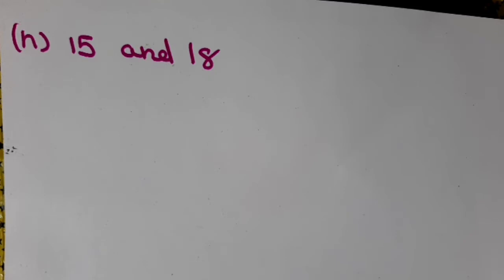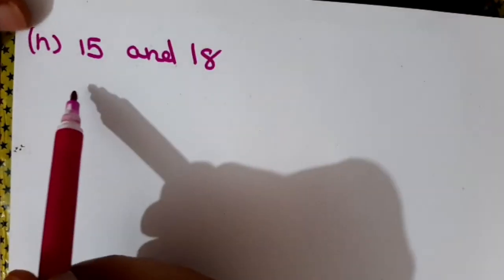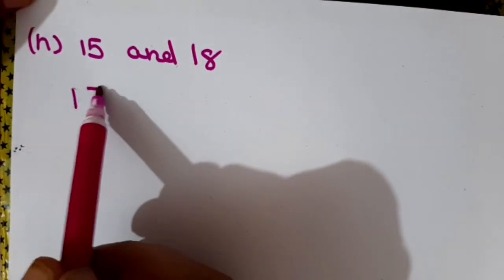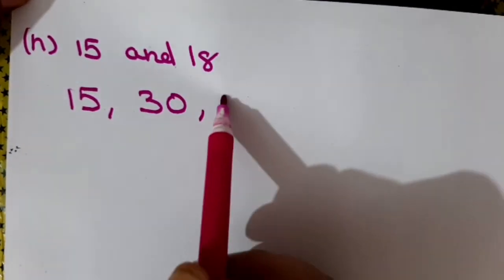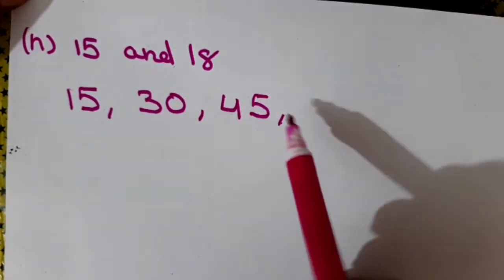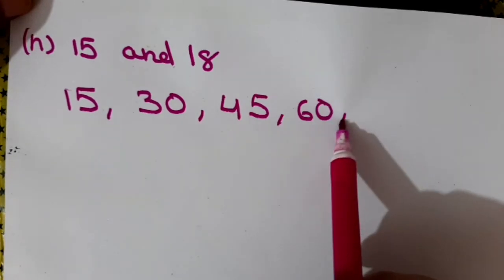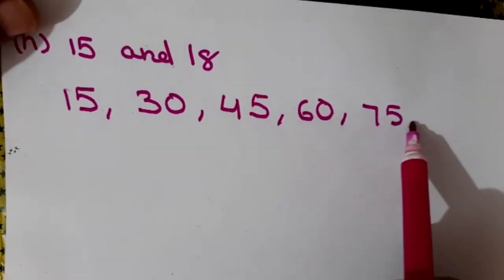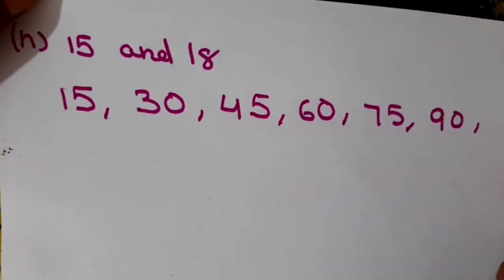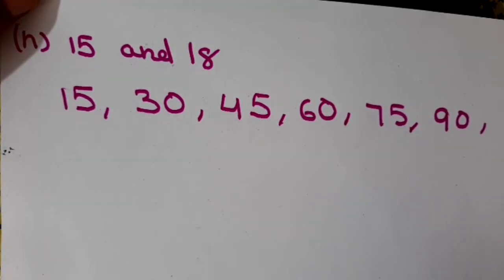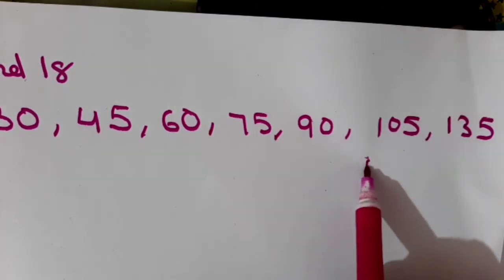Now I will do part H — I have to find the first ten multiples of 15 and 18, then find the common multiples, and then the LCM. So let us start with the first ten multiples of 15: 15, 30, 45, 60, 75, 90, 105, 120, 135 and 150.